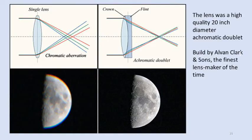The lens was a very high quality achromatic doublet. That is, two lenses back to back to help control chromatic aberration.